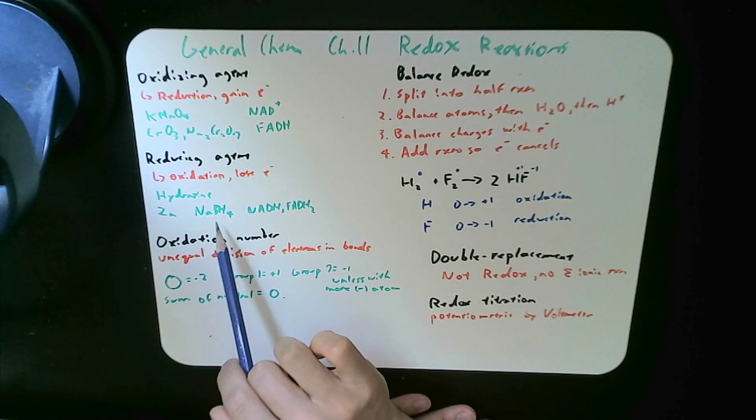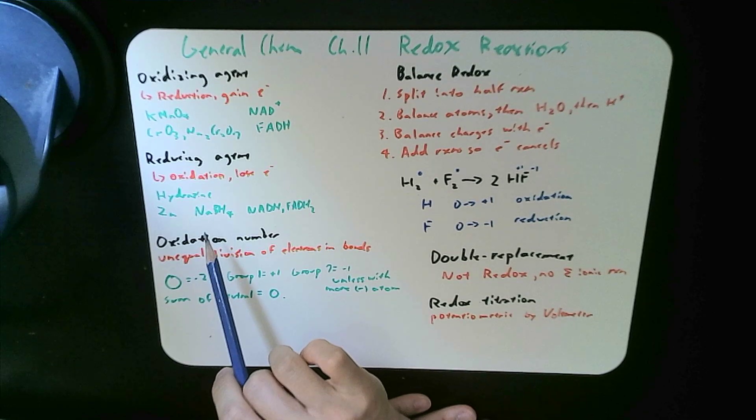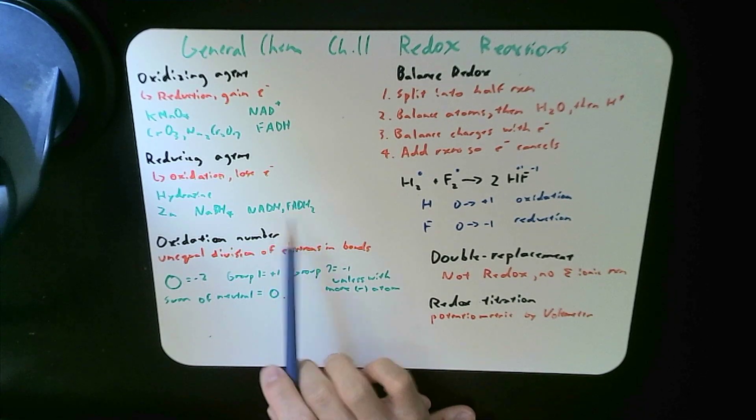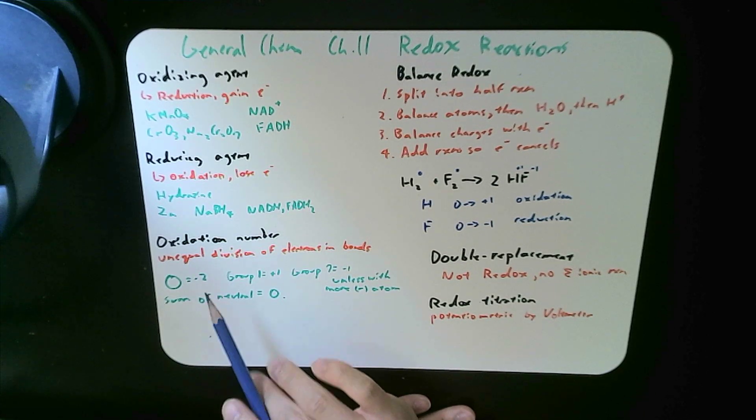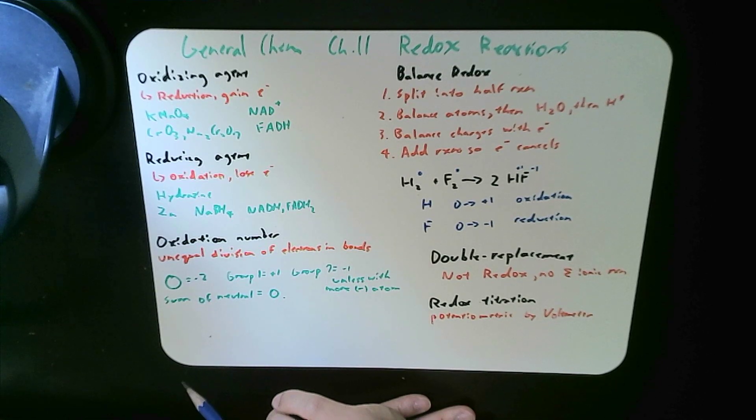Well, the reducing agents, NaBH4, LiAlH4, as well as NADH, FADH2, they go on to have oxidation potential, and they lose electrons to drive a certain reaction to occur.